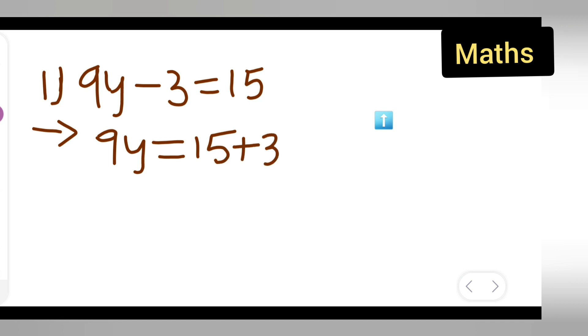Why I wrote plus 3? Here minus 3 is there. Because minus 3 is towards the left side, when you take it other side, the negative term will become positive. If it is positive, it will become negative, right?